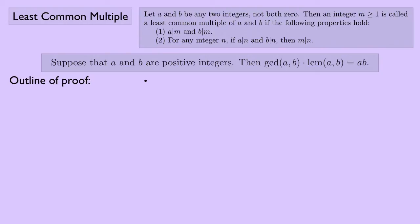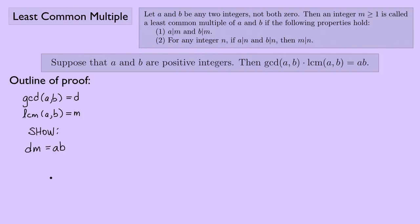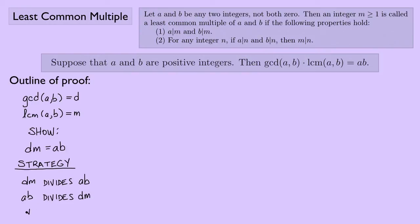Let's outline a proof. I'll let D denote the greatest common divisor of a and b, and M denote the least common multiple. I need to show that D times M equals A times B. The strategy — similar to showing two sets are equal — is to show that DM divides AB and that AB divides DM. Since all these numbers are positive, that will show DM equals AB. Let's first look at DM dividing AB.